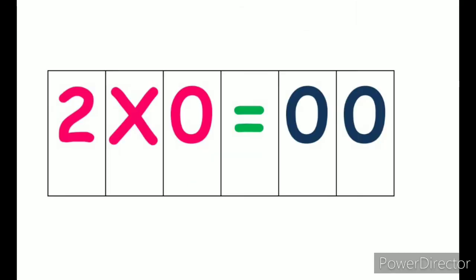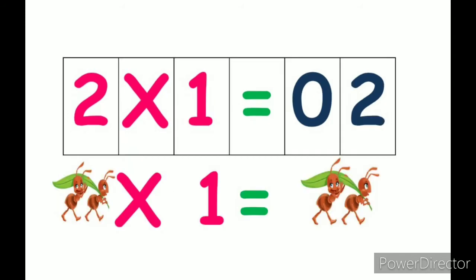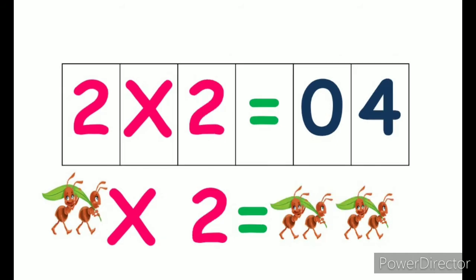Now 2 zeros are 0. As I told you, any number multiplying with 0 will always be 0. So 2 zeros are 0. 2 ones are 2. Here you can see 2 ants. There is one group of 2 ants. So there are 2 ants. It is equal to 2 ants. 2 ones are 2. 2 twos are 4. Now 2 ants are multiplied with 2. So how many ants can you see now? 4 ants in group of 2. So 2 twos are 4.